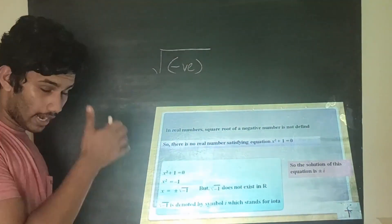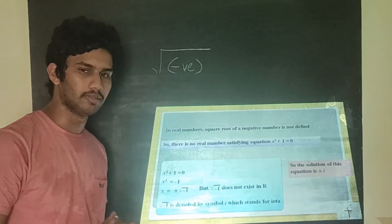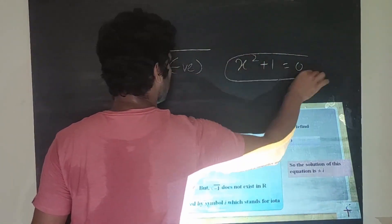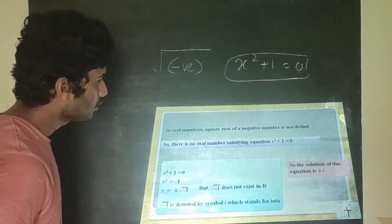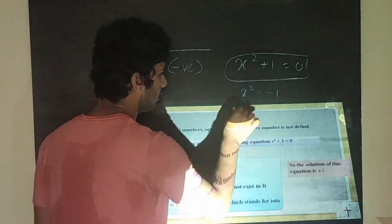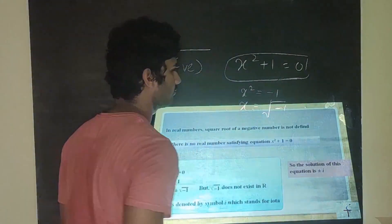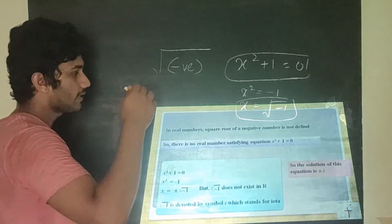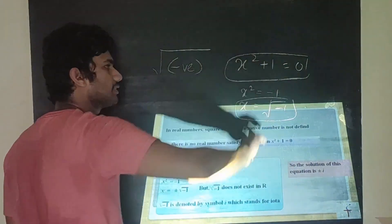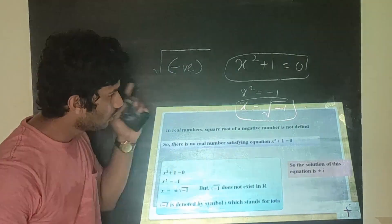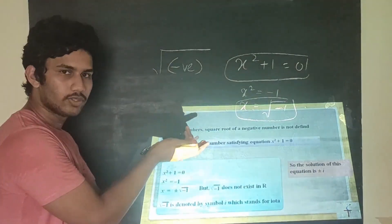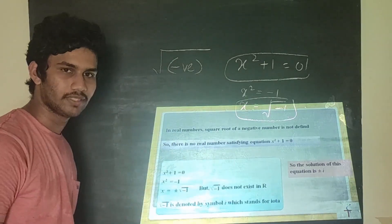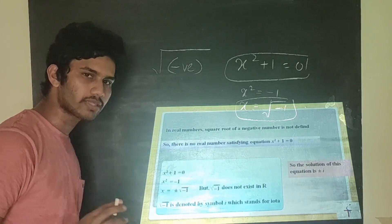As stated, the square root of a negative number is not defined in the real number system. Consider the simple example: x² + 1 = 0. This is a quadratic equation, so x² = −1, meaning x = √(−1). The square root of −1 is not defined in the real numbers, implying there is no real number that satisfies this equation — only a complex number does. This is the starting point and the basic motivation for complex numbers.